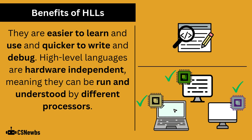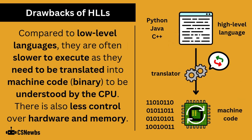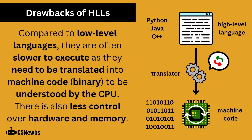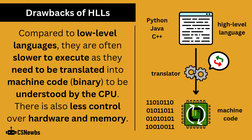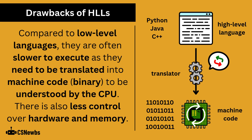For example, Python can be written on one computer and then understood and executed on a wide range of other devices. However, compared to low-level languages, they are often slower to execute, as they need to be translated into machine code to be understood by the CPU.